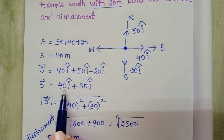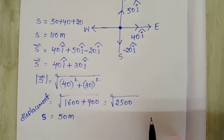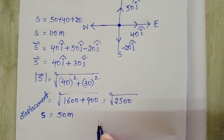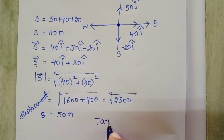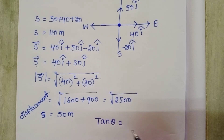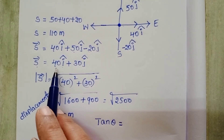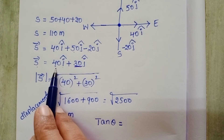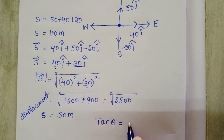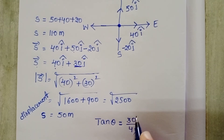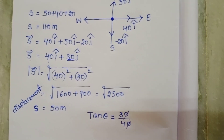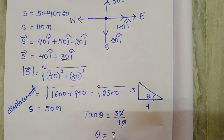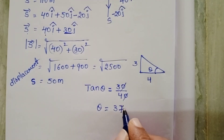The displacement vector is 40 i-cap plus 30 j-cap. To find the direction of the particle, take tan theta. So tan theta equals y divided by x. Here the y-coordinate is 30 and the x-coordinate is 40, so tan theta equals 30 by 40, giving theta equals 37 degrees.